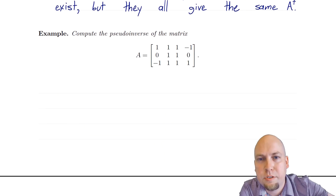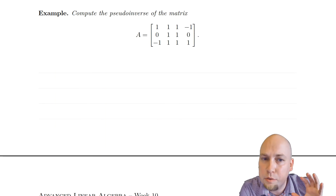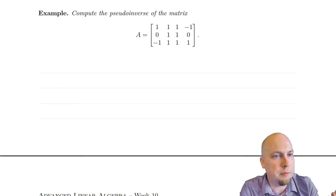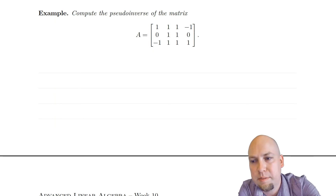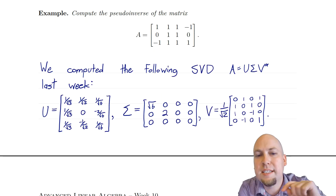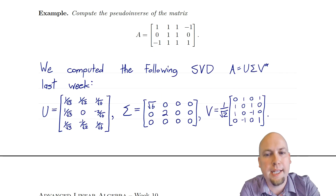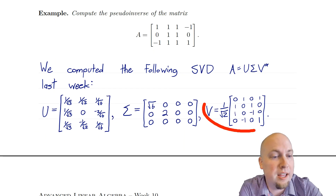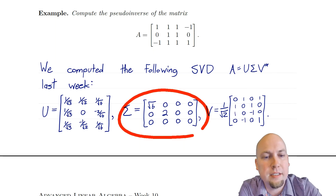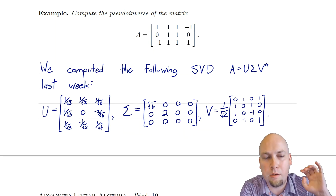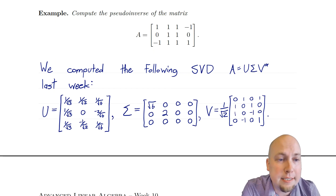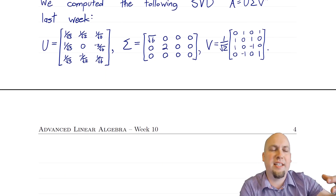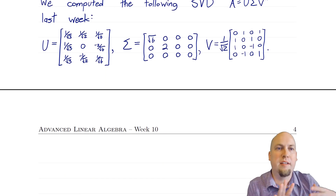Let's go through a numerical example to illustrate how to compute the pseudo-inverse of a matrix. We'll use a matrix whose SVD we've already computed in a previous lecture to save time. We've seen that one singular value decomposition of this matrix has a certain unitary on the left, a unitary on the right, and singular values root 6, 2, and 0. We'll compute the pseudo-inverse via the SVD rather than the orthogonal rank-one sum decomposition.